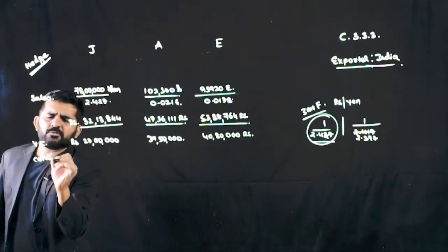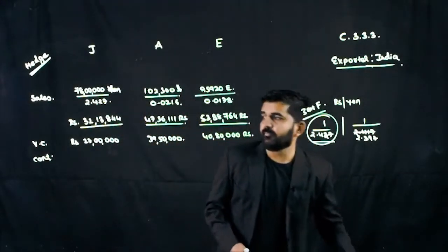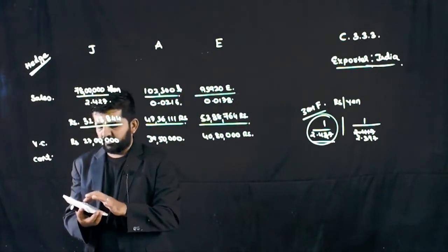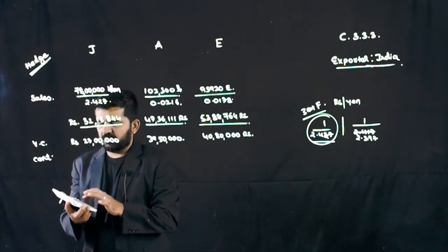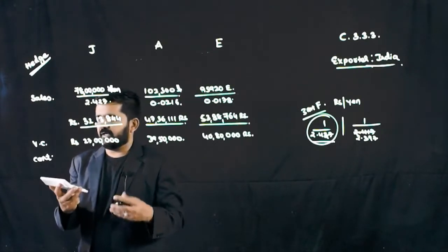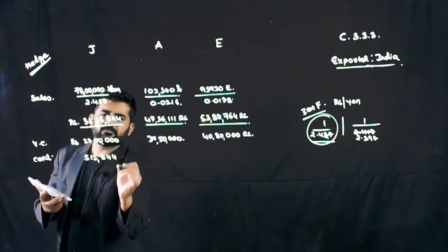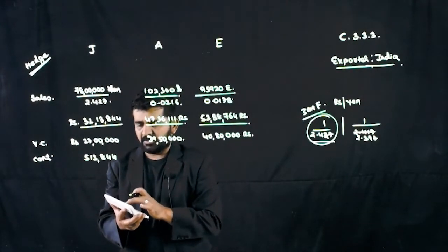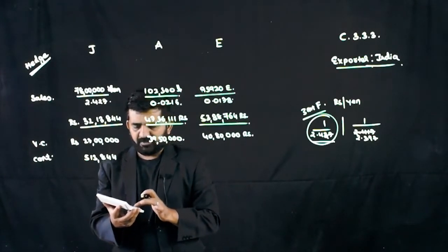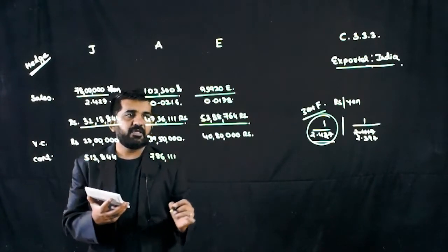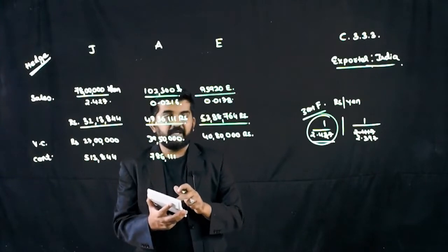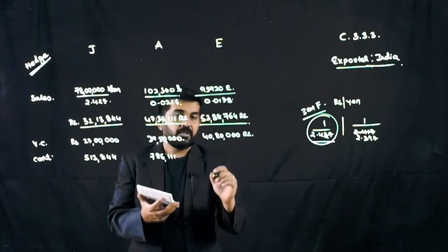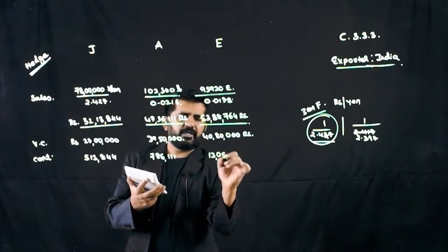I can find out contribution in all the cases. 32,13,844, minus 27,00,000, it is 5,13,844. In this case, it will be 47,36,111 minus 39,50,000. It is 7,86,111. And this is 53,88,764 minus 40,80,000. Gives me 13,08,764.